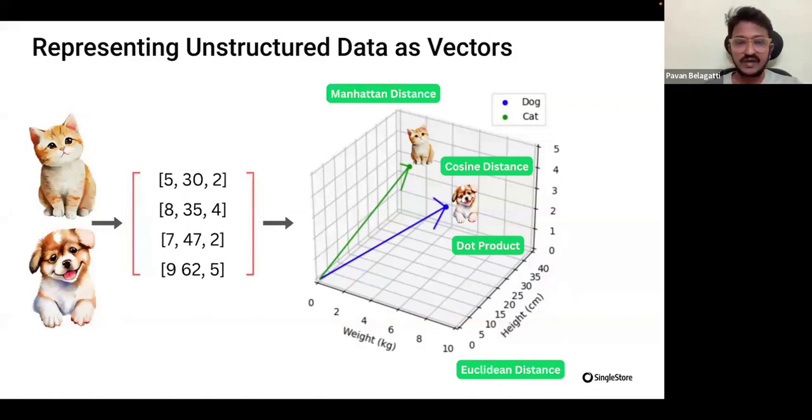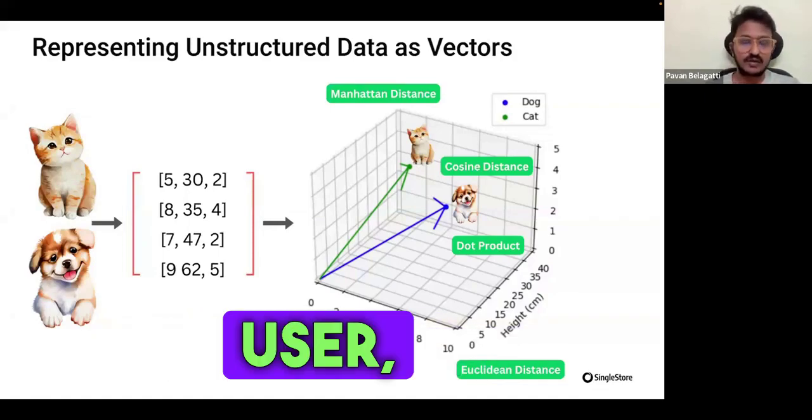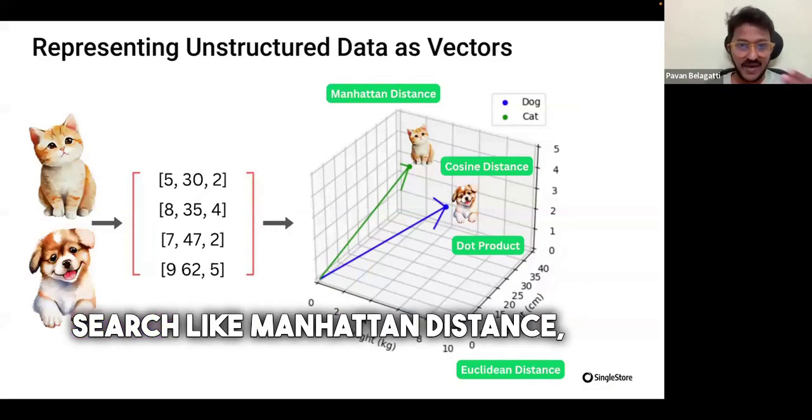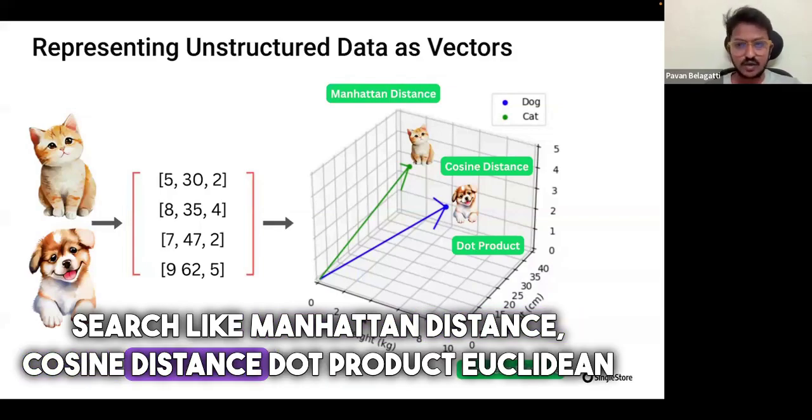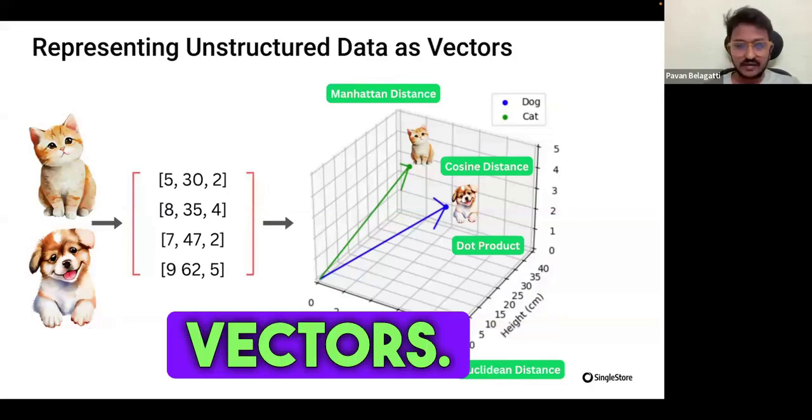But how does the vector database know the type of data to retrieve back to the user? There are different methodologies in vector search, like Manhattan distance, cosine distance, dot product, and Euclidean distance to find the distance between the vectors.